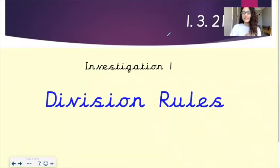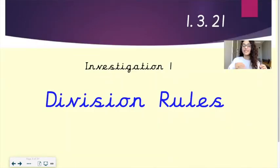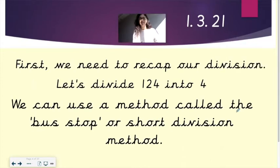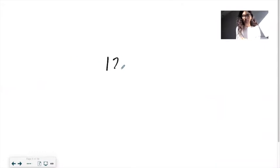Now we are going to do an investigation today, and investigation number one is all about division rules. First, we need to recap our division knowledge. So let's start by dividing 124 into 4. We can use a method called the bus stop or short division method, and here's how you do it. So our question is 124 divided by 4. So you put 124 under the little bus stop that we have, and you put 4 on the outside, because the bigger number always goes on the inside.